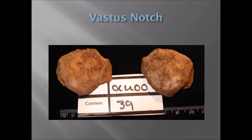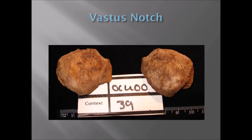The vastus notch - these are notches found in the kneecap, as I mentioned. It's just a little notch right here on the top inner side of the kneecap. These are fairly common as well. You may even be able to feel one on your own kneecap.